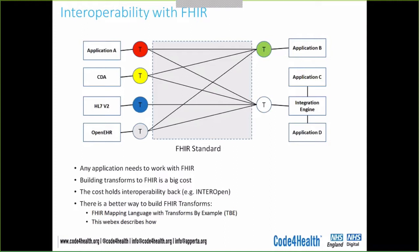The problem is that building those transforms is quite a big cost item. You have to understand your legacy or source data, you have to understand the FHIR representation of it, and you have to build transform software between the two, possibly to go in both directions — to FHIR and from FHIR. This is quite a big cost item, and it is holding interoperability back. Building transforms has always been the big cost item in interoperability. FHIR reduces that cost, but certainly doesn't eliminate it, and so that cost is holding interoperability work back. It's probably holding the work of INTEROPen back, in that members are finding the cost of building FHIR interfaces quite prohibitive.